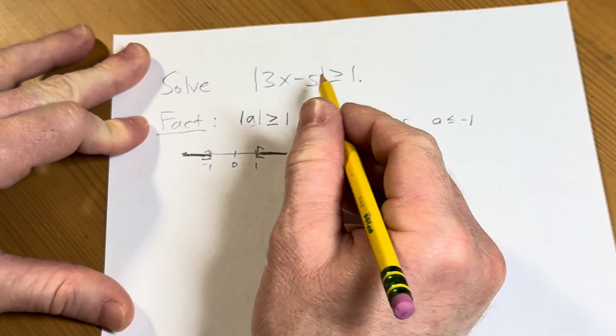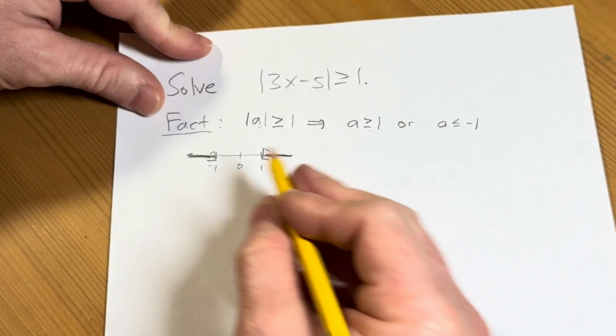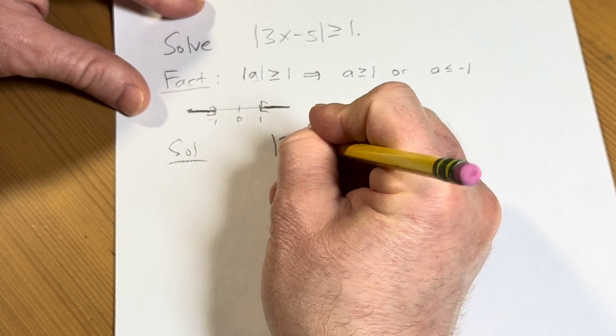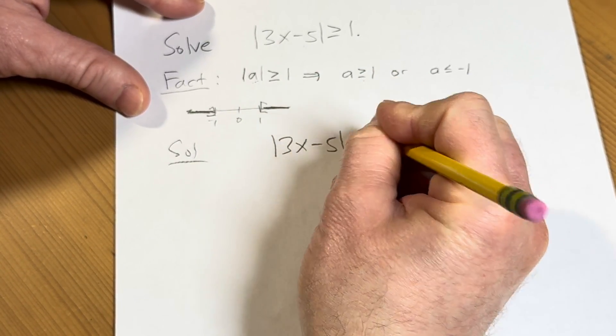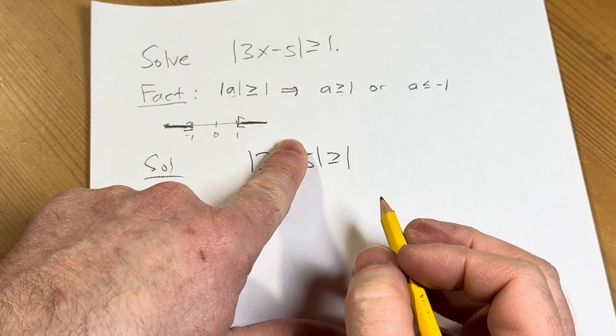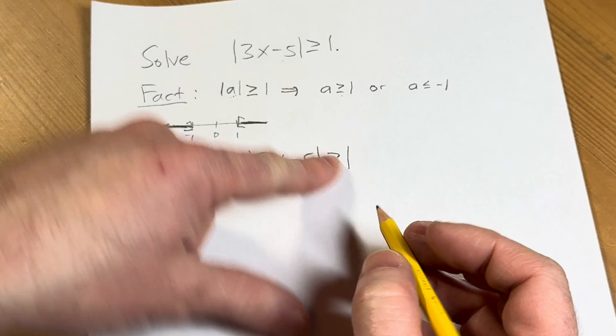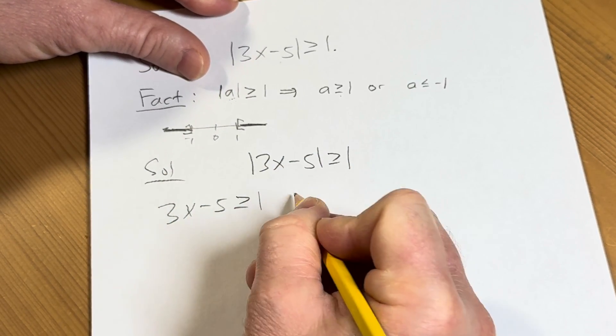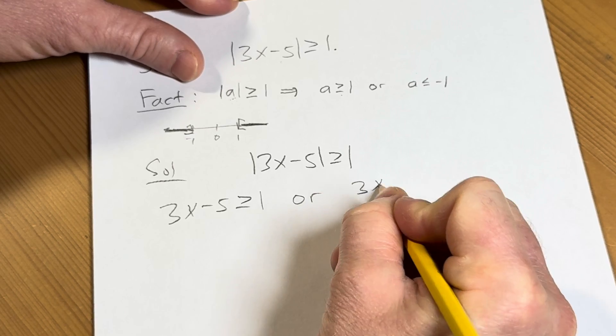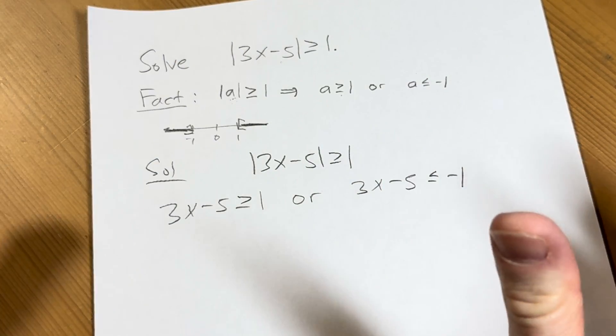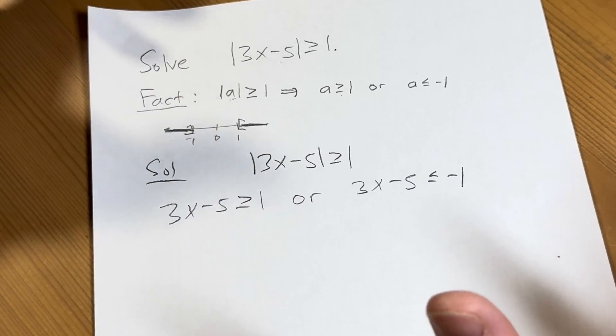So now back to our problem. So I'm going to start by writing it down again just for clarity. So we have that 3x minus 5 is a number whose distance from 0 is greater than or equal to 1. That means that 3x minus 5 must be greater than or equal to 1, or 3x minus 5 must be less than or equal to negative 1, because the distance between it and 0 is larger than 1.